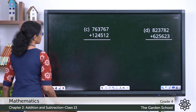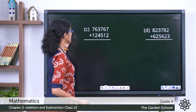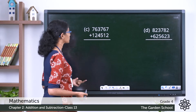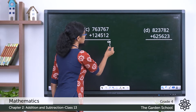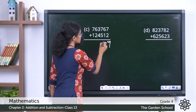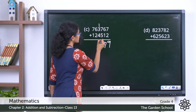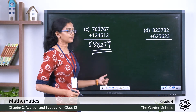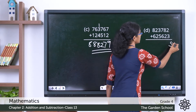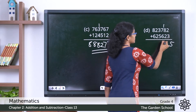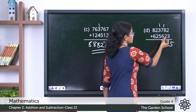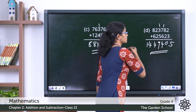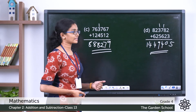Now the third question: seven lakh twenty-three thousand seven hundred sixty-seven plus one lakh twenty-four thousand five hundred twelve. Adding ones first: seven plus two is nine, six plus one is seven, five plus seven is twelve — carry over one, here it is eight, six plus two again is eight. That gives us the sum for question C. For question D: five, ten carry over one, six plus seven thirteen plus one is fourteen carry over one, five plus three eight plus one nine, two plus two four, and eight plus six is fourteen. So the answer is fourteen lakh forty-nine thousand four hundred five.